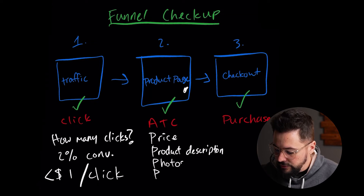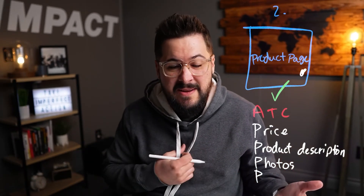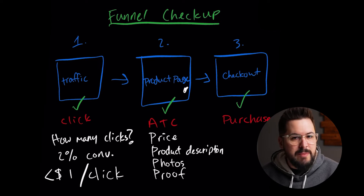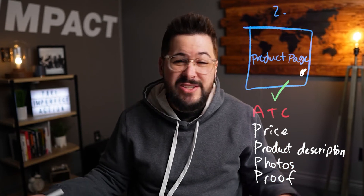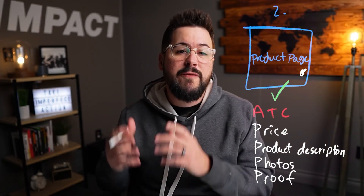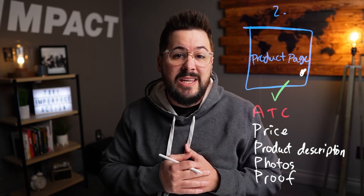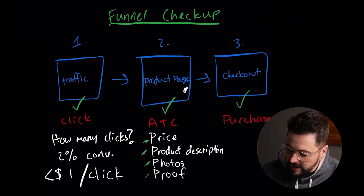The third thing is photos. Do you have good product photos on your product page? Are you using poor photos that don't show your product in a good light? Maybe you need to get some more compelling photos. And the last P is proof — social proof and reviews. So many stores — I would say nine out of ten stores I look at — just don't have any reviews. Reviews are so important: over 90% of customers consider product reviews before they make a purchase.